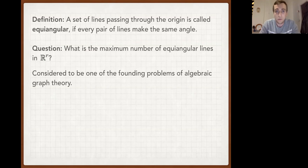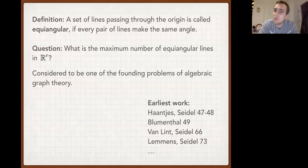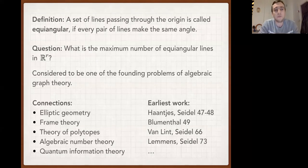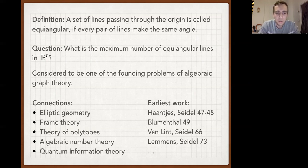This is an old question, considered one of the founding problems of algebraic graph theory. It goes back to the works of Hantes and his student Seidel, who was kind of the main contributor. The connections this question has are to various fields of math, including elliptic geometry — where Hantes was first interested in it — and more recently, frame theory and the theory of polytopes. Perhaps even more surprisingly, it has connections to algebraic number theory and quantum information theory.